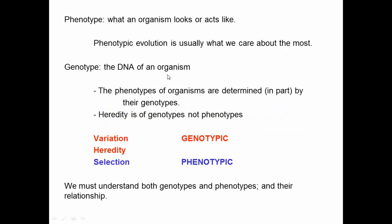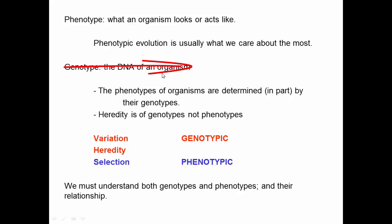To think about this, let's step back and remind ourselves of some terms. The phenotype is what an organism looks or acts like, and phenotypic evolution is usually what we care about most. Phenotypes are what natural selection operates on — natural selection doesn't act directly on genotypes, it selects on phenotypes. The genotype is the DNA of an organism, and phenotypes are determined in part by genotypes and also by environment. Selection occurs on phenotypes, but phenotypes arise because of genotypes, and it's genotypes that are inherited, not phenotypes.